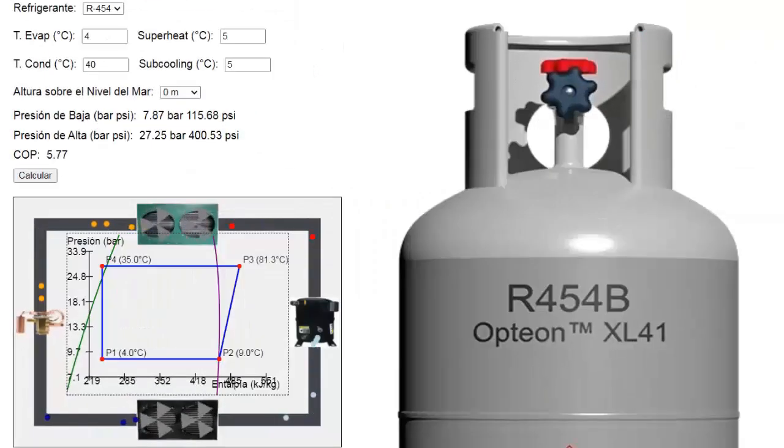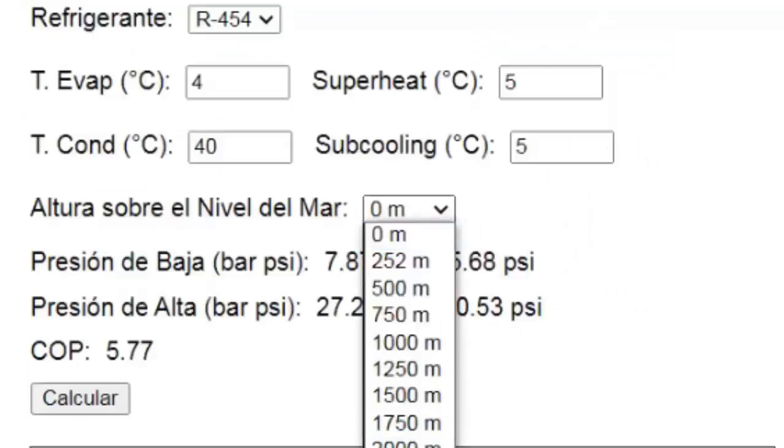The pressure indicated by the system's pressure gauge depends on the altitude above sea level. In this field of the simulator, we can select the equipment's altitude above sea level. This allows for a more accurate gauge pressure reading, which is crucial for high-precision refrigeration equipment.